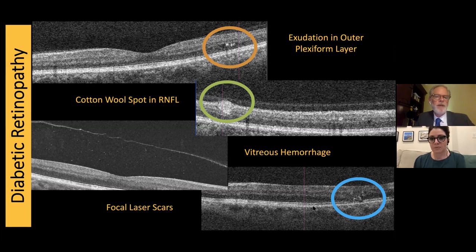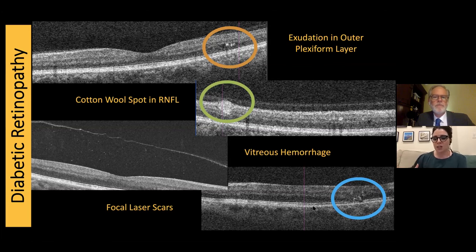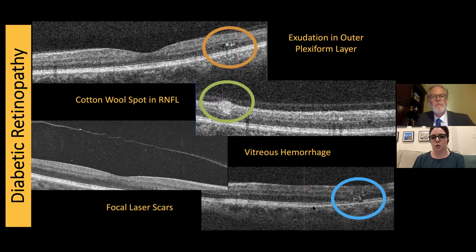I probably should do nerve fiber layer analysis more often after cotton wool spots. One of my biggest concerns is making sure we're treating patients for the condition they actually have — you'd hate to treat someone for glaucoma because cotton wool spot damage mimics a glaucomatous change. I have done OCTs of the nerve fiber layer on those patients, but it's something I should add more to day-to-day practice, especially if it's a glaucoma suspect already with borderline IOPs — grab it and know exactly where that defect could have come from.